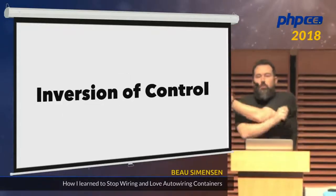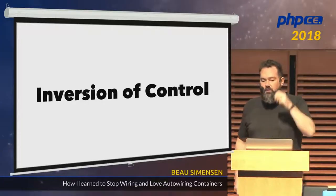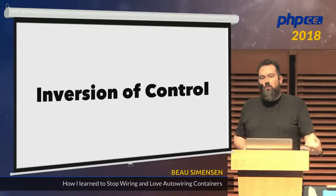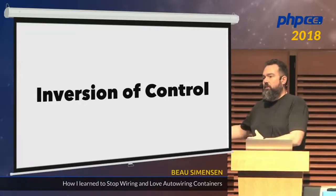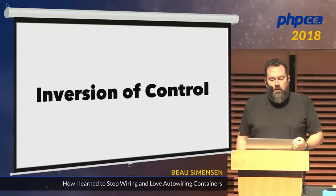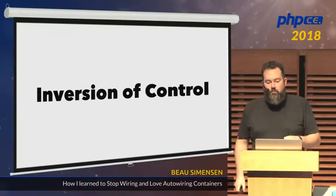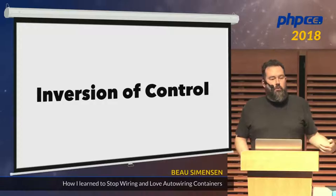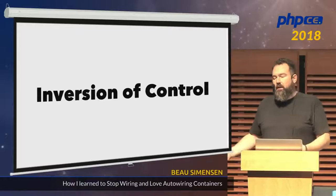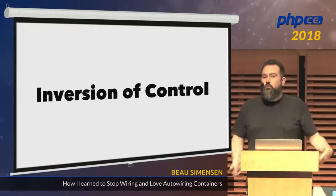In traditional programming, the flow of business logic is usually statically bound to the code as it's written. You define the objects that you need and pass them around. With inversion of control, the flow of information and where objects come from is built during program execution. The runtime binding is achieved by some other mechanism, rather than you actually instantiating those objects or creating those dependencies yourself.